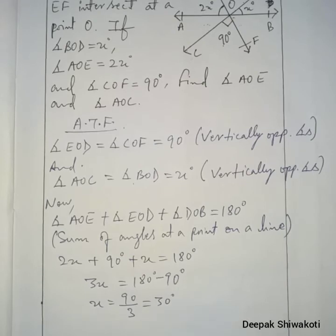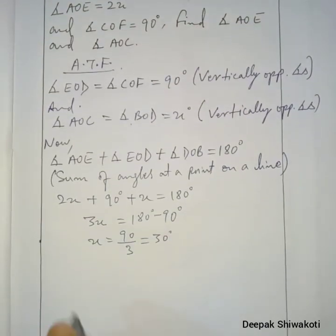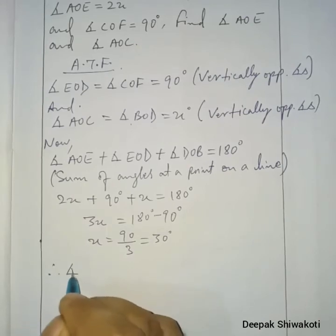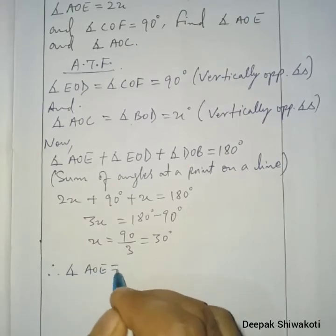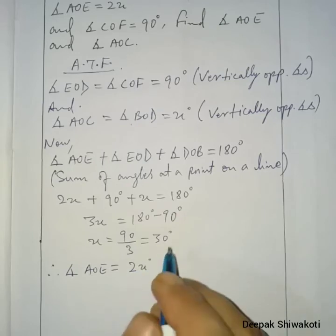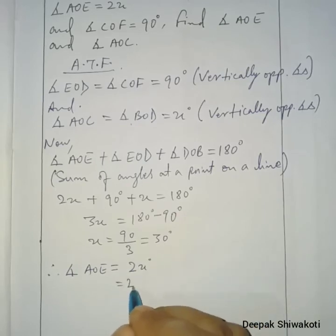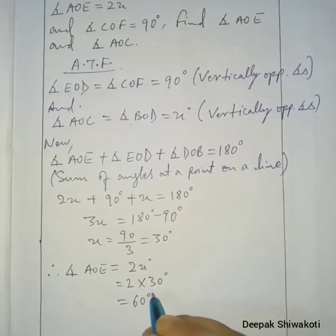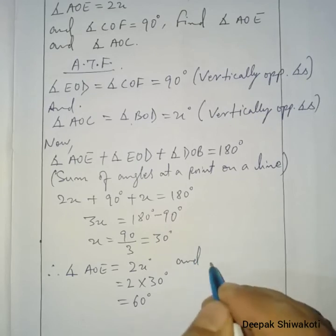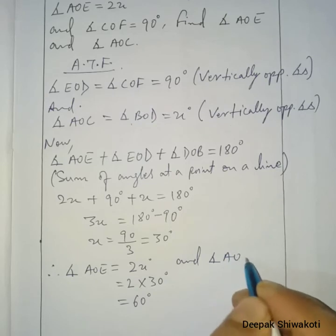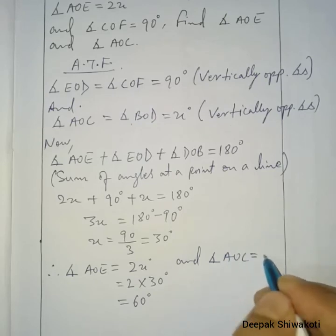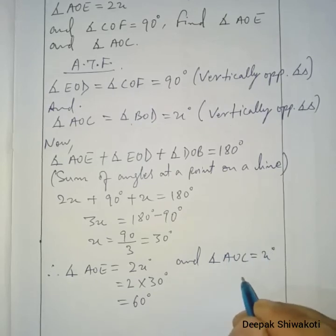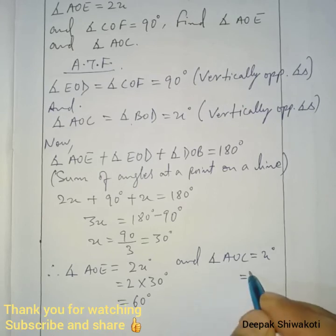So x we have found. Value of x is 30 degrees. Therefore angle AOE equals 2x degrees, which equals 2 times 30, that is 60 degrees. And angle AOC equals x degrees, and since x is 30, angle AOC equals 30 degrees.